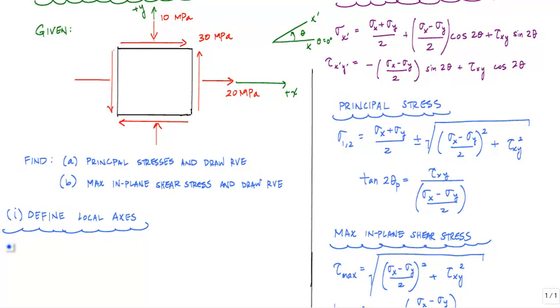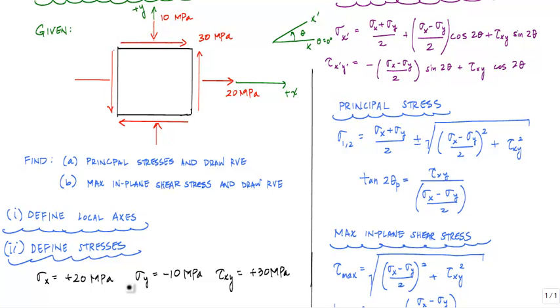We are now able to define our stresses, which tells us that sigma x is positive 20 megapascals, sigma y minus 10 megapascals, and tau xy, because it's on the plus x face in the plus y direction, positive 30 megapascals.